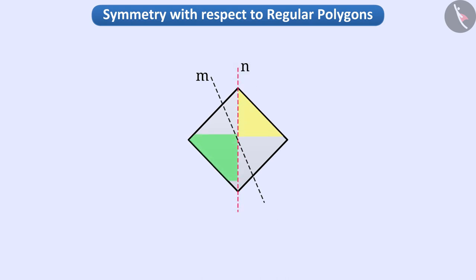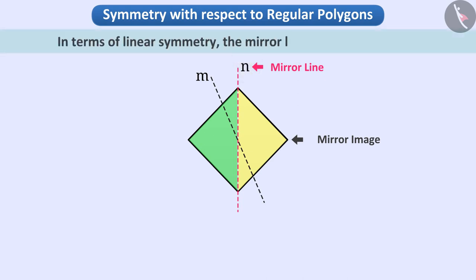this line divides the shape into two such parts that one half of the shape becomes a mirror image of the other half. Therefore, we can consider the line N as a mirror line. Since the mirror line is a symmetric line in terms of linear symmetry, N is also a symmetric line.